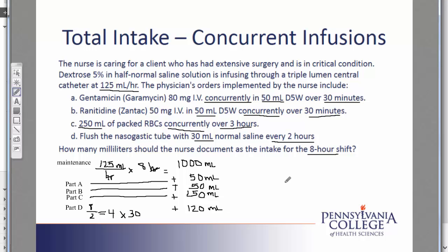Since the problem asks for total intake, and I have addressed the maintenance fluids, the two medications, the red blood cells, and the flush, I have all the different liquids the patient is receiving. My final step is to add all of these parts together, and when I do that, I get a total of 1,470 mL as the intake during the eight-hour shift.